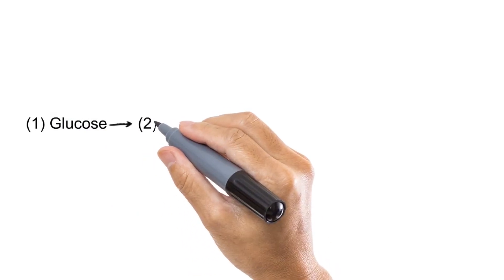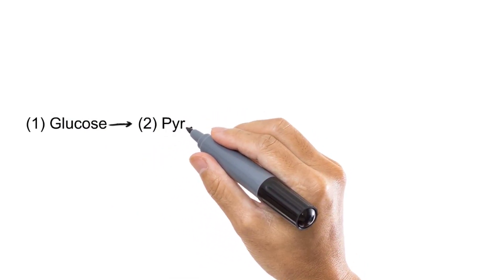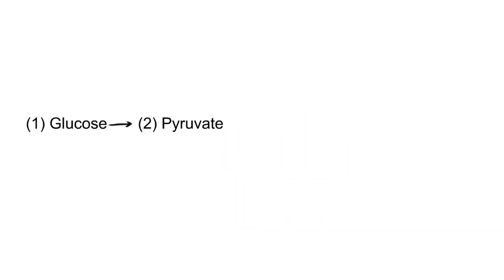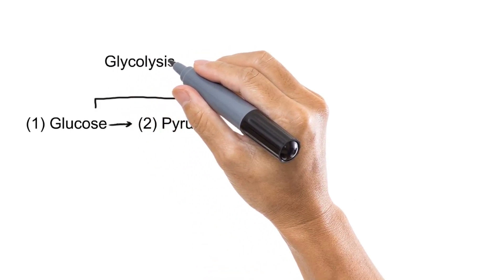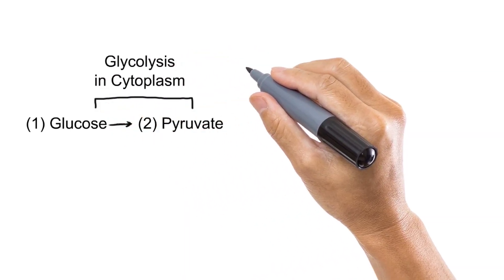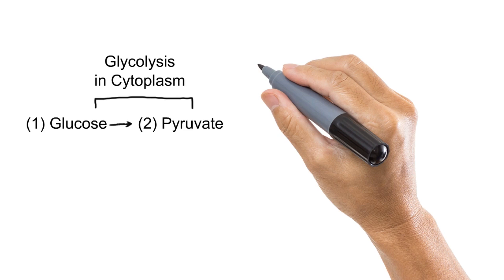Once the glucose molecule enters the cytoplasm of the cell — considering only one molecule of glucose — that one molecule of glucose is converted to two molecules of pyruvate. This conversion is carried out in ten enzyme-catalyzed reactions collectively known as glycolysis. So in the first phase of respiration, one molecule of glucose is converted to two molecules of pyruvate.